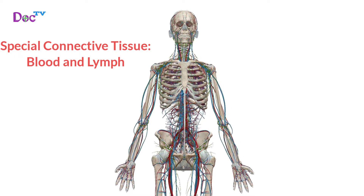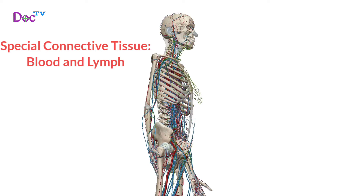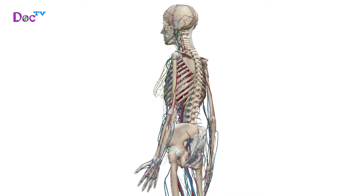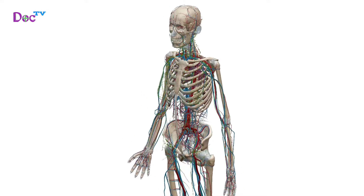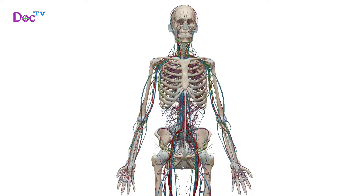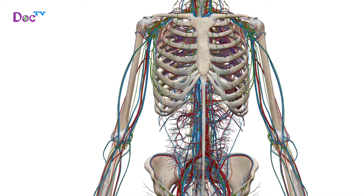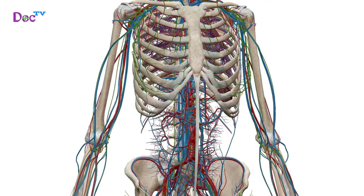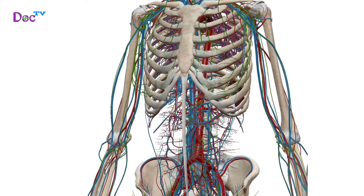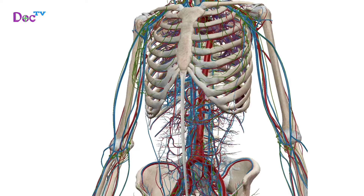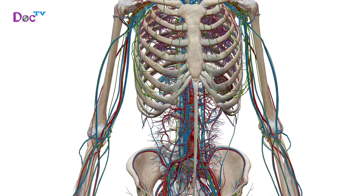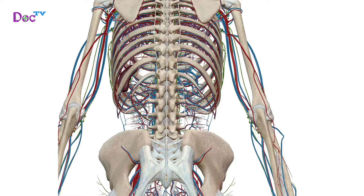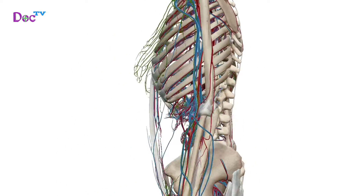Blood and lymph are atypical connective tissues that circulate throughout the blood and lymphatic vessels of the body. Blood consists of red blood cells (erythrocytes) with scattered white blood cells (leukocytes) and platelets suspended in a fluid blood plasma matrix. Red blood cells transport respiratory gases; white blood cells — neutrophils, lymphocytes, monocytes, eosinophils and basophils — protect the body from pathogens; and platelets contain enzymes and proteins responsible for clotting.